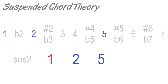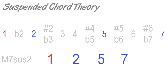We can add the minor 7th to sus2 chords. We can also add the major 7th to sus2 chords, which would have sounded perhaps a little too dissonant over suspended fourth chords.